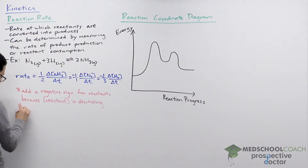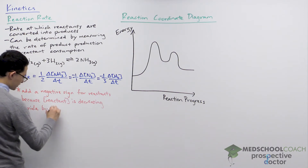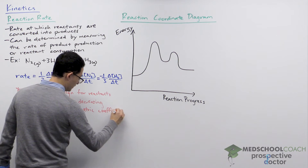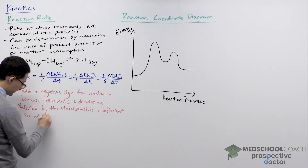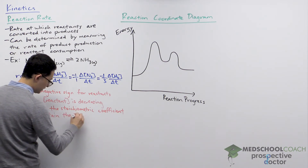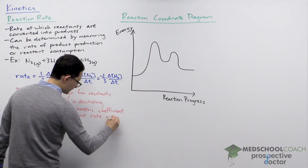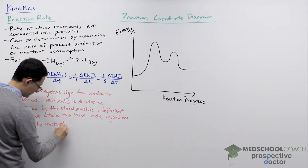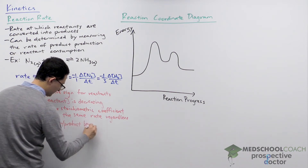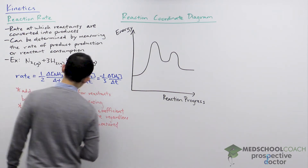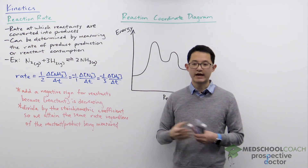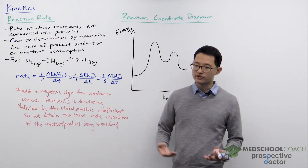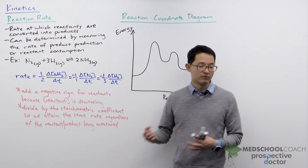We divide by the stoichiometric coefficient so we attain the same rate regardless of the reactant or product being measured. That's reaction rate, as well as how to write expressions to calculate the reaction rate of a reaction. Using this information, it gives you actual numerical values like your reaction proceeding at two molar per second or half a molar per second.